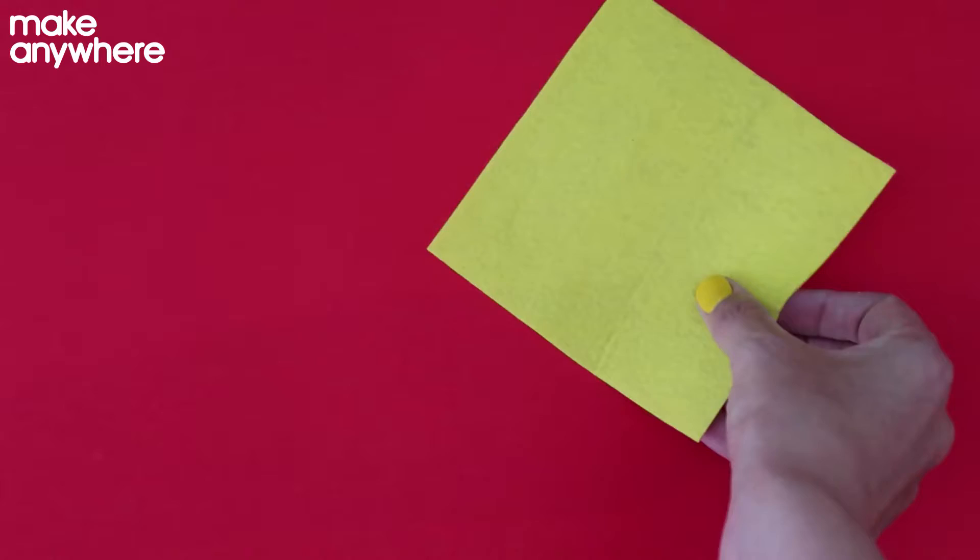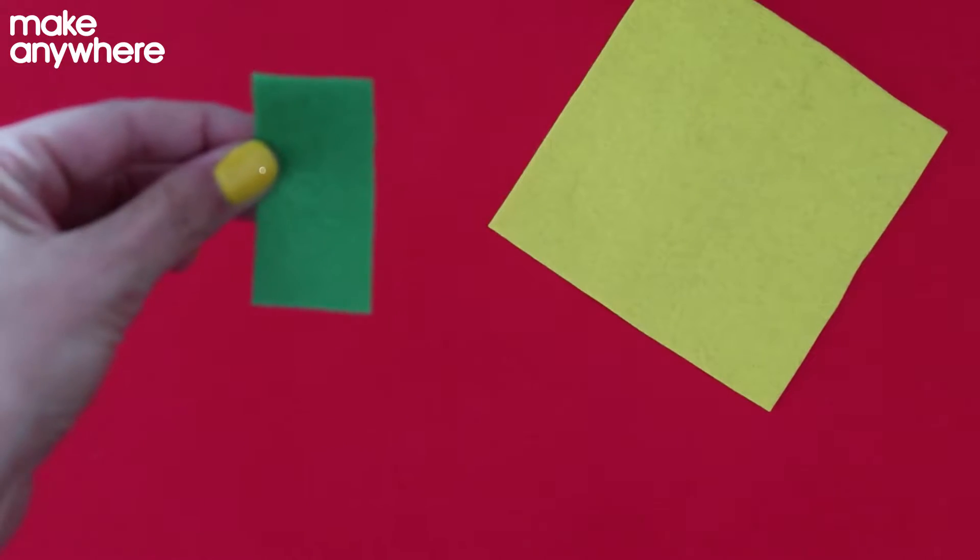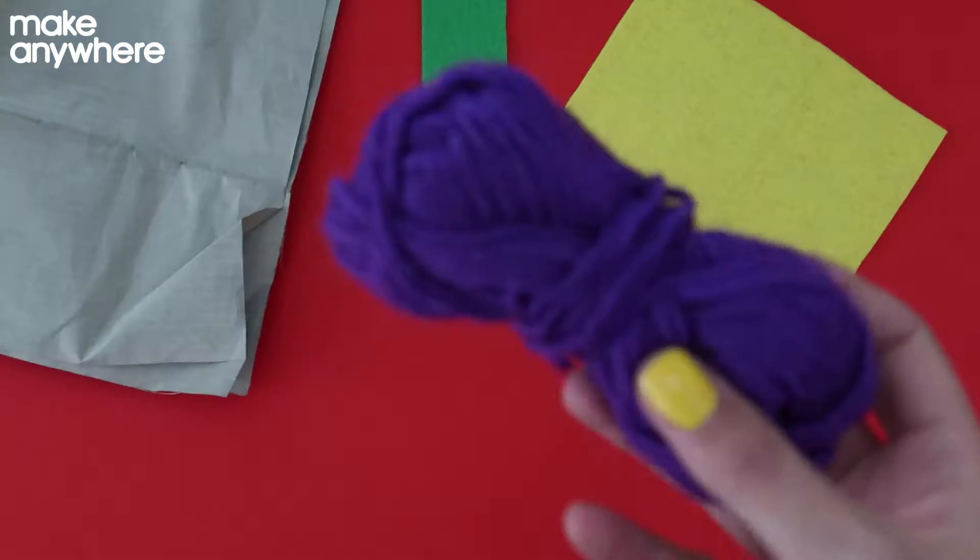You're going to need a piece of felt, a smaller piece of felt for your battery holder, some conductive fabric, and some wool.